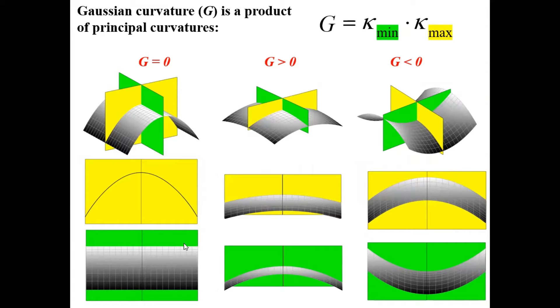If in one of these directions the surface is flat, as you can see here, then the Gaussian curvature is zero because one of the principal curvatures is zero. If it is not flat in both of the directions, then we have two cases.